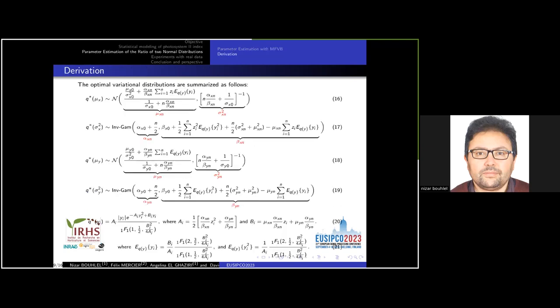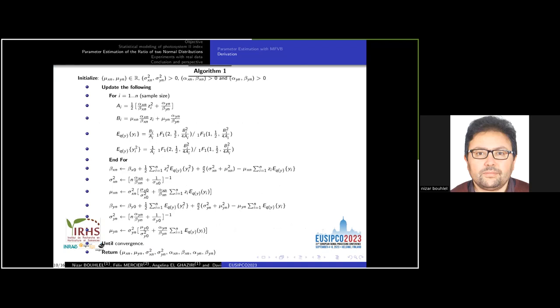After derivation, the optimal variational distributions are then summarized by these equations. The parameters mu X, mu Y, sigma X, sigma Y, alpha X, beta X, alpha Y, and beta Y are determined from algorithm 1 with the following updating procedure. We stop the iterative scheme when the change of the L2 norm of a vector is smaller than epsilon equal to 0.001.